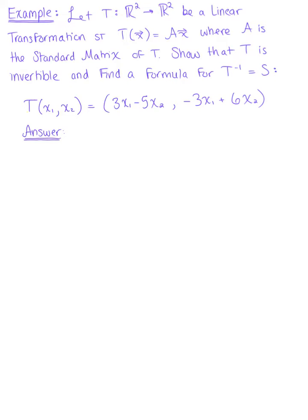Let T from R² to R² be a linear transformation such that the image of vector x under the action of T equals matrix A times vector x, where A is the standard matrix of T. And we want to show that T is invertible and then find a formula for the inverse of our transformation.